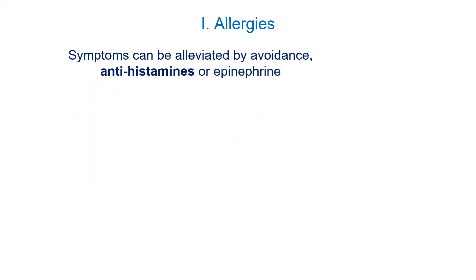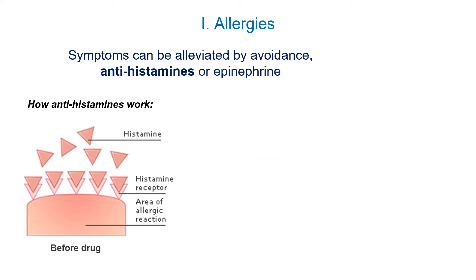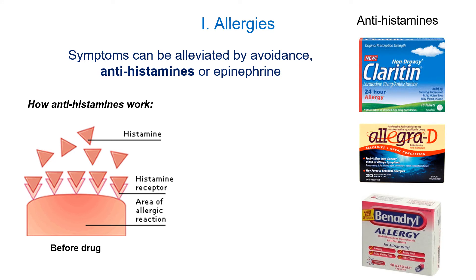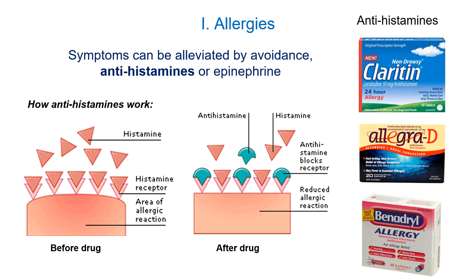How do we deal with allergies? We can use antihistamines. Histamines are chemical messengers that tell tissues to increase blood flow and cause inflammation. Antihistamines — such as Benadryl, Claritin, and Allegra — are better at preventing allergies than alleviating symptoms. They work by blocking histamine receptors, so the histamines can't get in and cause inflammation.